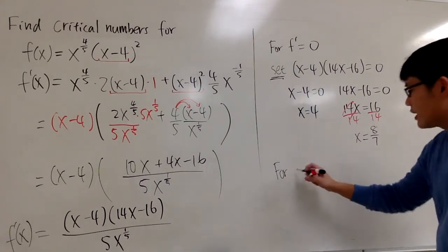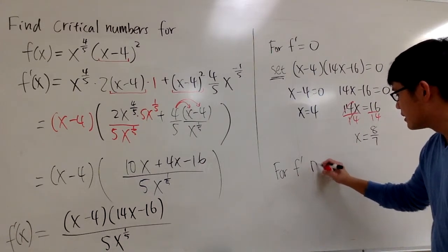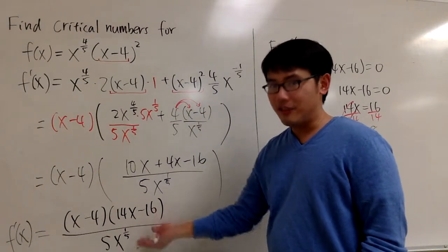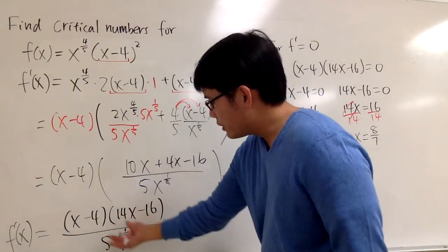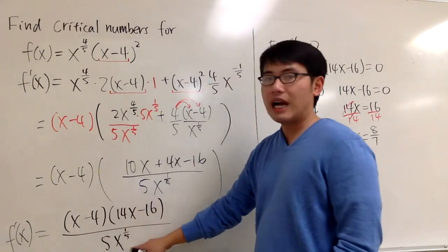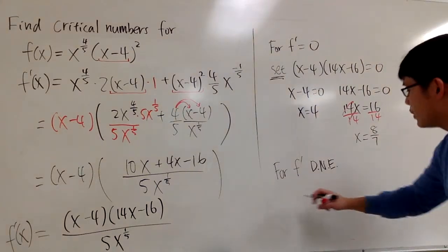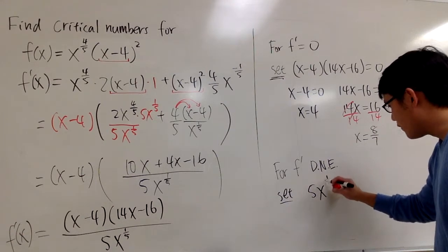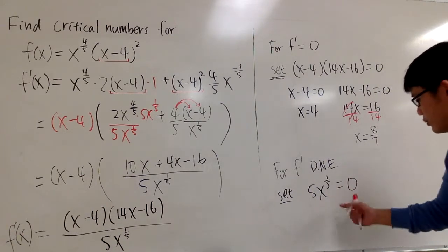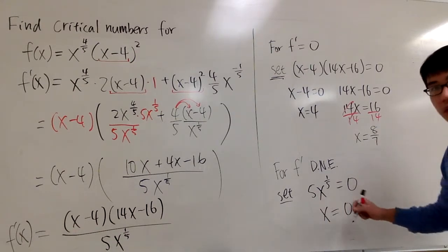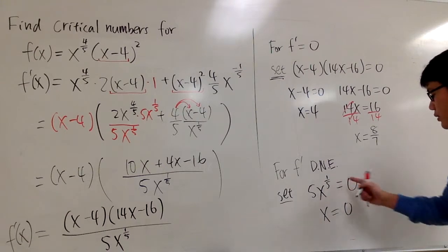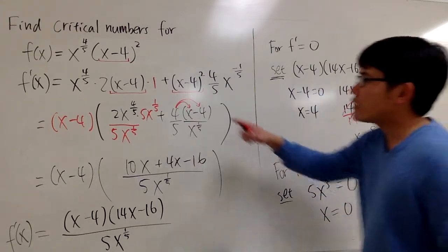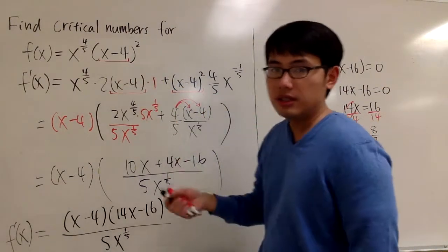For the critical numbers, we also have to check out to see where f prime does not exist. In that situation, we go back to this form. It's a fraction. Then you are going to get a number that does not exist when you have the bottom is equal to 0. So in this case, we are going to set the bottom equal to 0. So that's the 5x to the 1/5 equals to 0. And in this situation, of course, we will get x is equal to 0. You can divide by 5 on both sides and then raise to the 5th power. You get x is equal to 0. In this situation, you have to kind of make sure though, because 0 is actually inside of the domain of the original function. So it is a critical number.